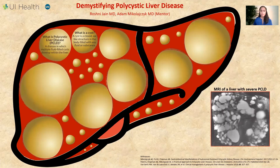Polycystic liver disease occurs when multiple fluid-filled cysts develop within the liver. This is not a common disease — it affects just a fraction of people across all populations.